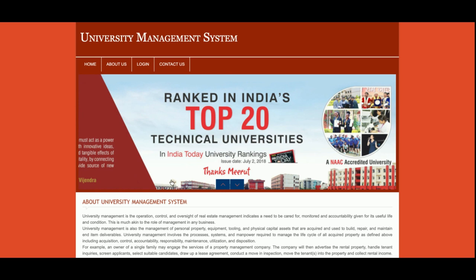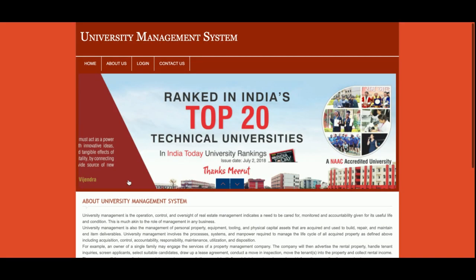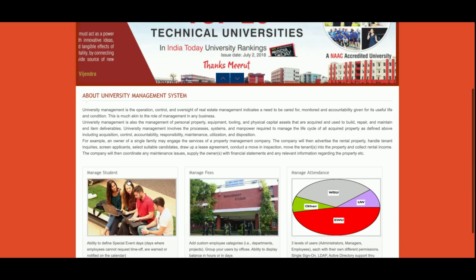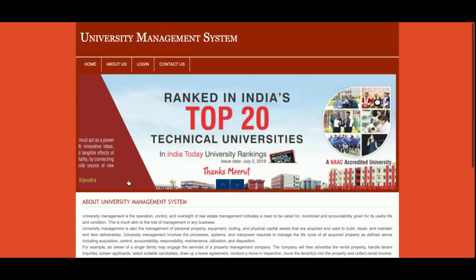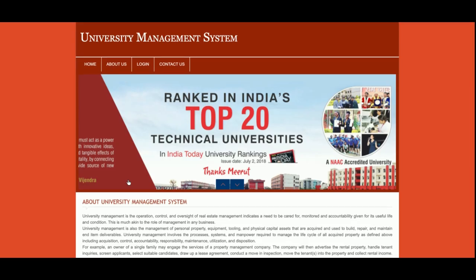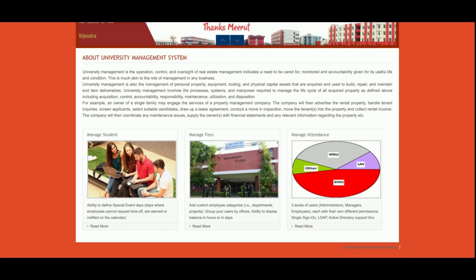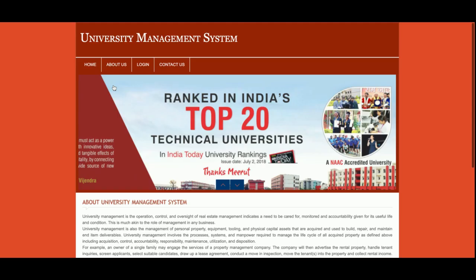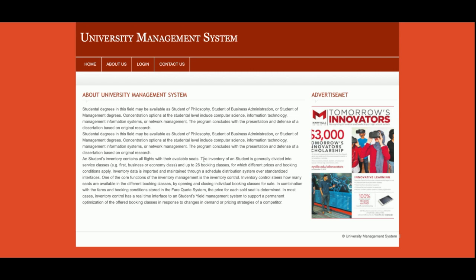Let's start with the functionality walkthrough. This is the home page of the project — a simple static home page. If you want to change the content or replace the image, you can do so from the HTML pages; there is nothing dynamic on this page. This is the About page — it contains static information about the university management system, and you can change the content if you want.